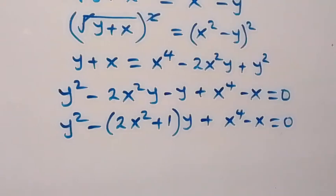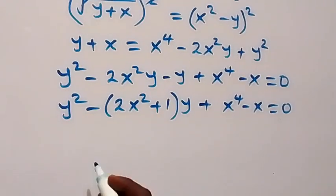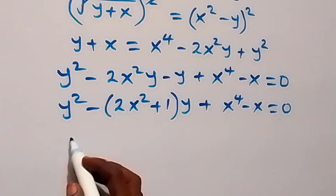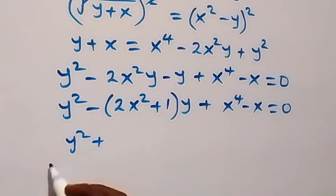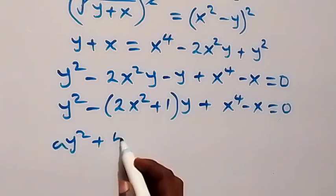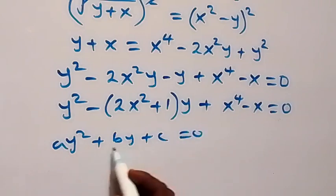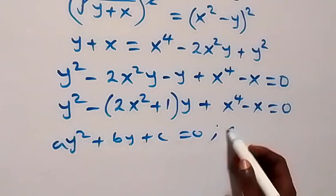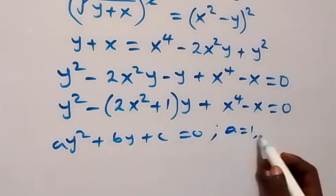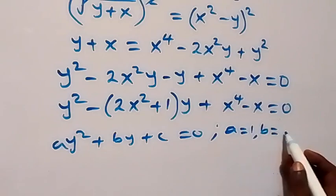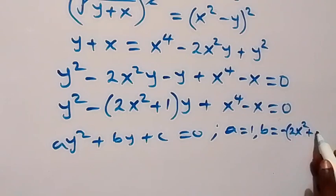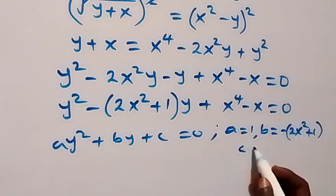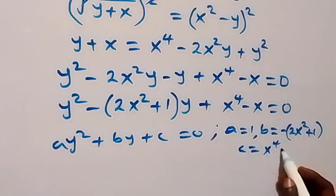From here, we follow the pattern of the quadratic equation: a y squared plus b y plus c equals to 0, in terms of y. When we compare the coefficients, a is equal to 1, and b in this case is the same thing as minus bracket 2x squared plus 1 close bracket, and c is the same thing as x raised to the power 4 minus x.